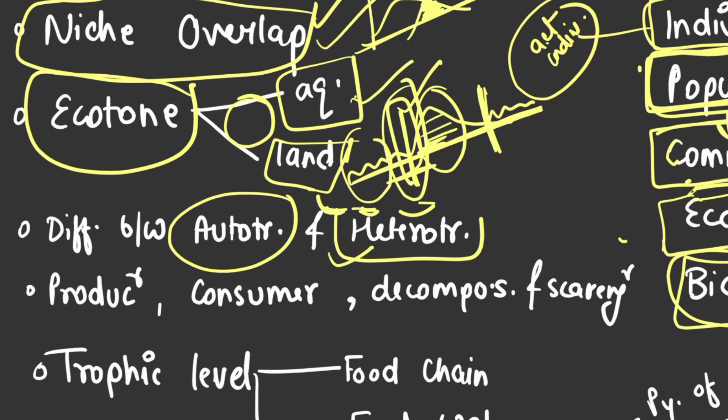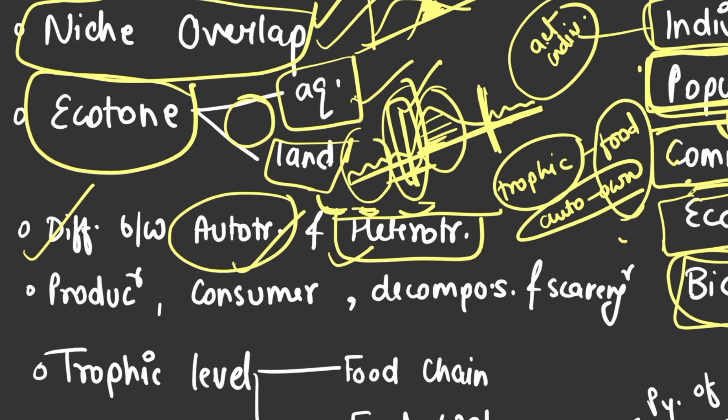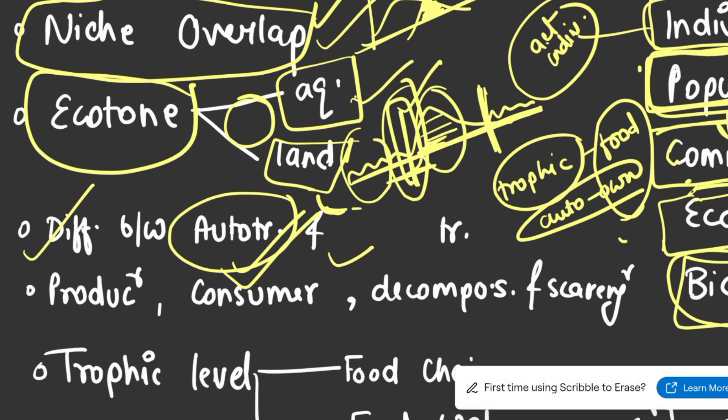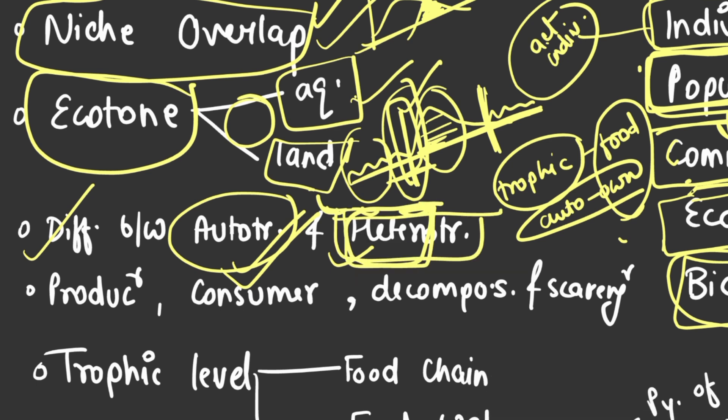Next is difference between autotroph and heterotroph. First, let's talk about trophic level. Auto means own and trophic means food. Organisms that make their own food are called autotrophic. And organisms that depend on others for food are called heterotrophic.